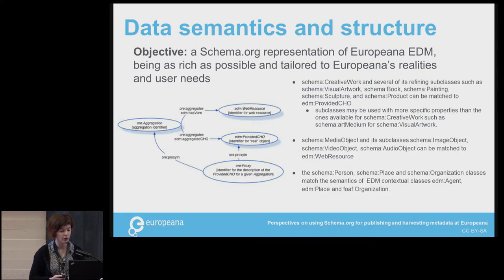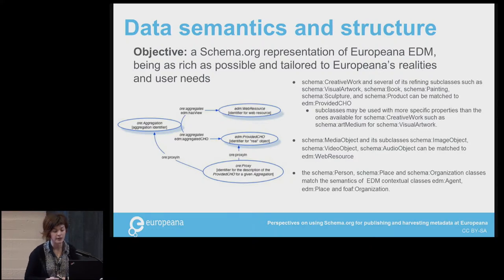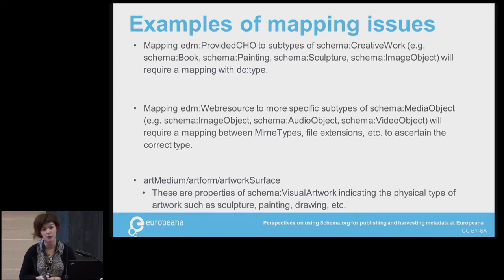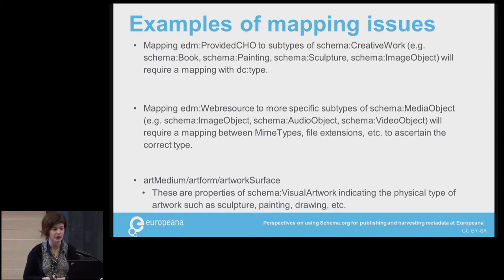There are several subclasses relevant under each class — under CreativeWork you have VisualArtwork, schema:Book, schema:Painting, and under MediaObject you have ImageObject, VideoObject, AudioObject. So you can refine the mapping. However, there were still some issues: to map our providedCHO to subclasses of CreativeWork, we need to know the type of the cultural heritage object, and we don't always have this information — it might be a string in a language we don't understand, like Estonian or Latvian.